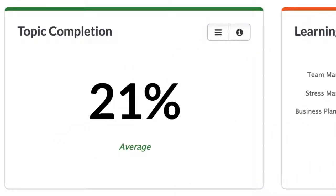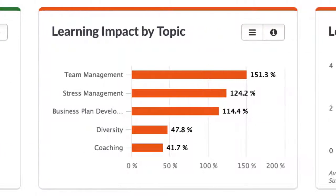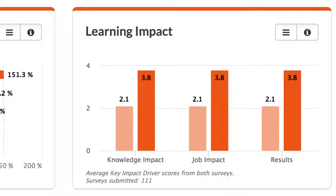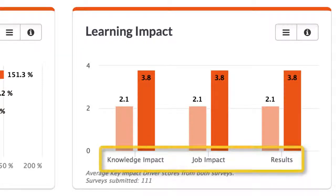The Topic Completion dashlet shows the percentage of active learners who have completed at least one topic based on the required completion criteria. Like Trending Topics, the Learning Impact by Topic dashlet presents the five topics with the highest learning impact percentage. The Learning Impact dashlet shows the average for all topics across three key metrics—knowledge impact, job impact, and results—as reported by learners.